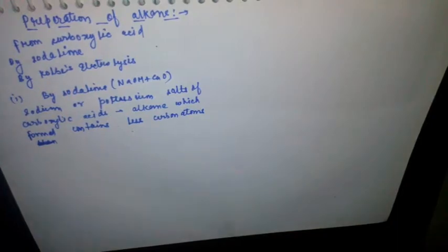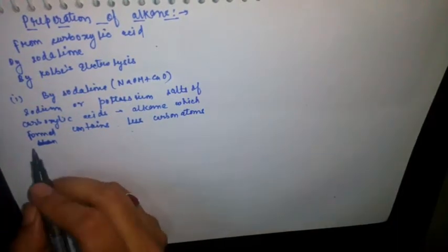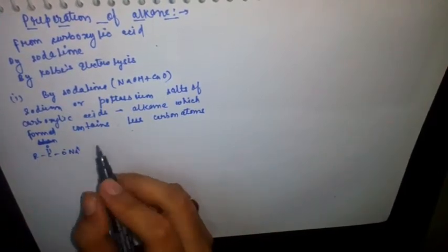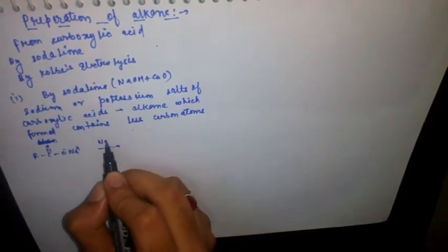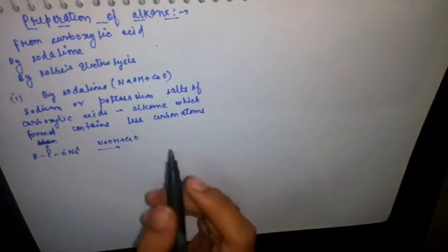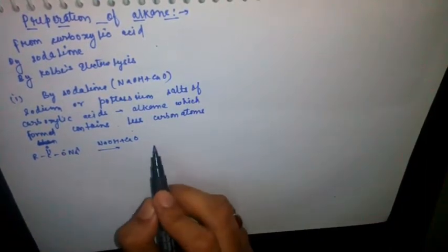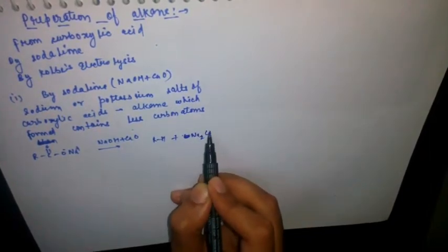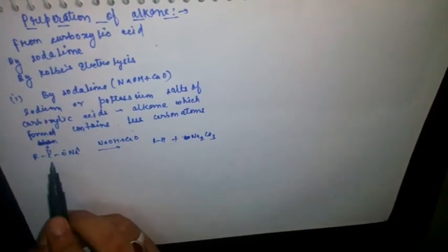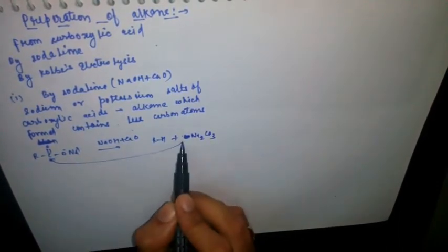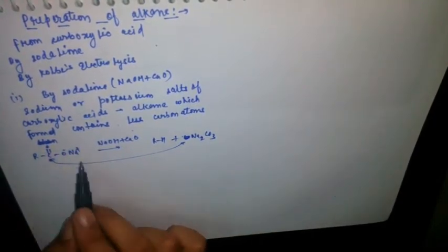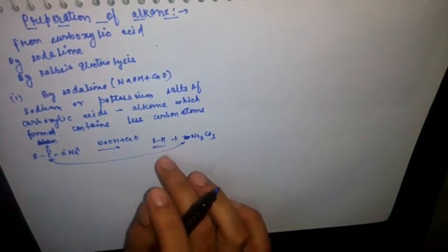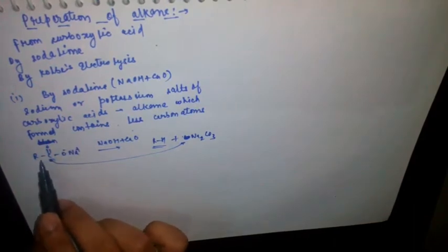The alkane formed contains fewer carbon atoms than the parent reactant. For example, R-COO⁻ Na⁺ when decarboxylated with NaOH plus CaO gives an alkane (R-H) plus Na₂CO₃. One carbon atom is removed from the parent compound, so the alkane formed has fewer carbons.